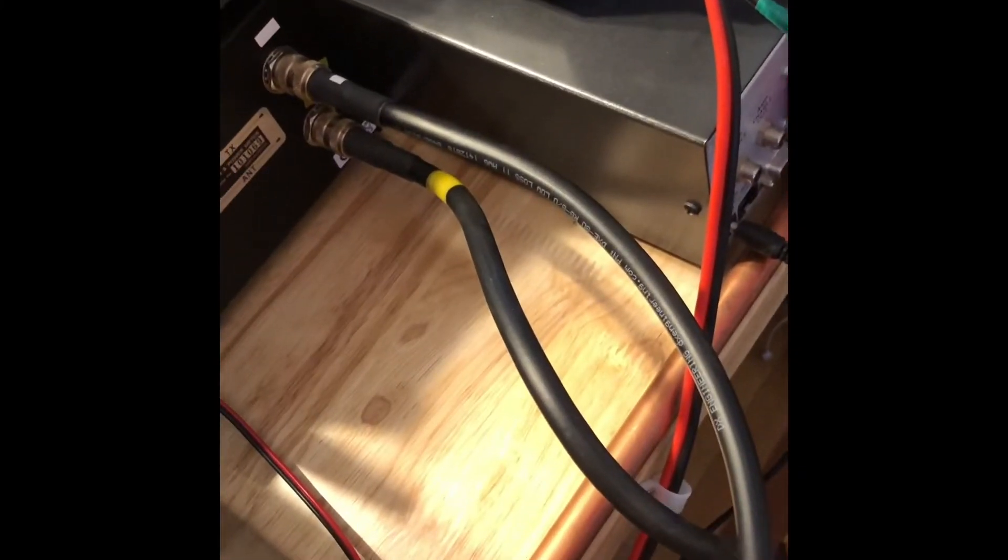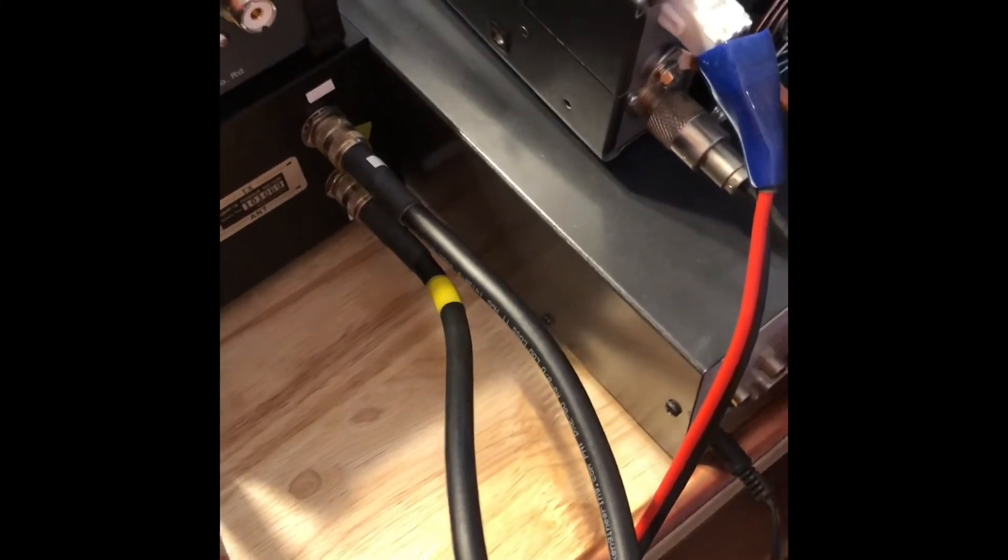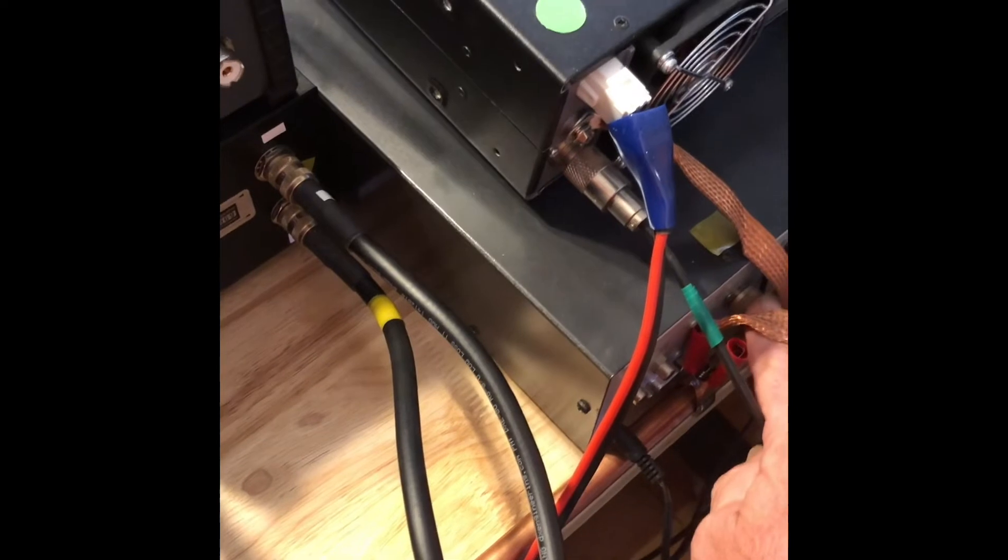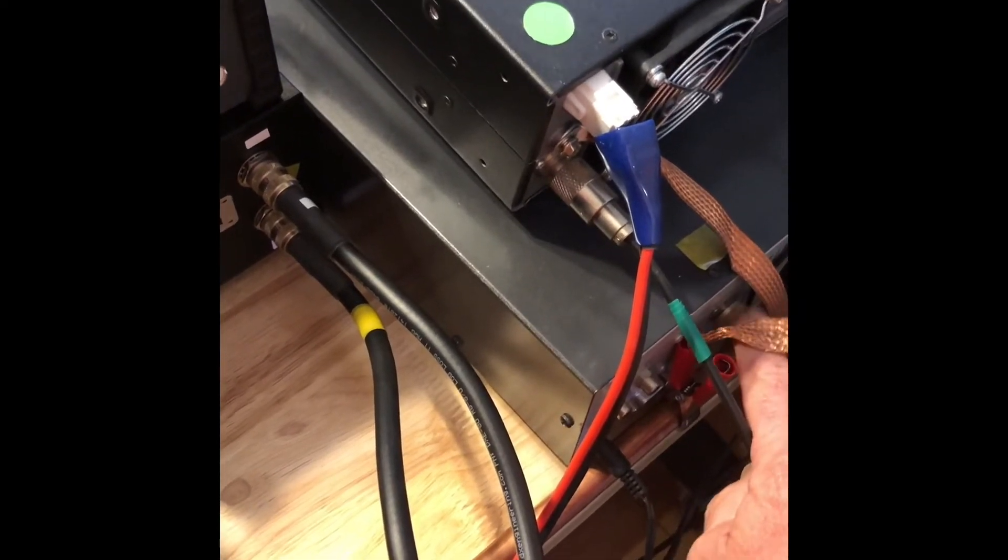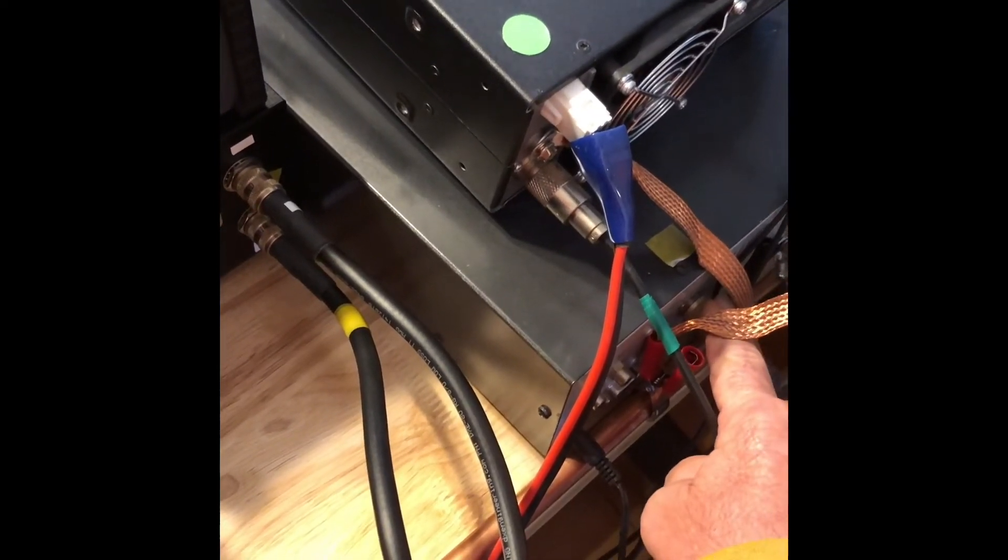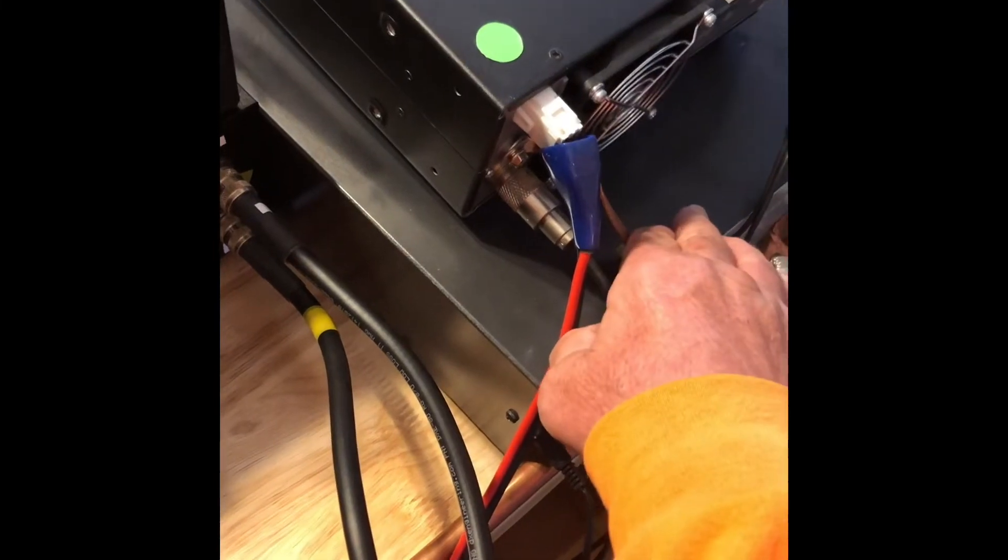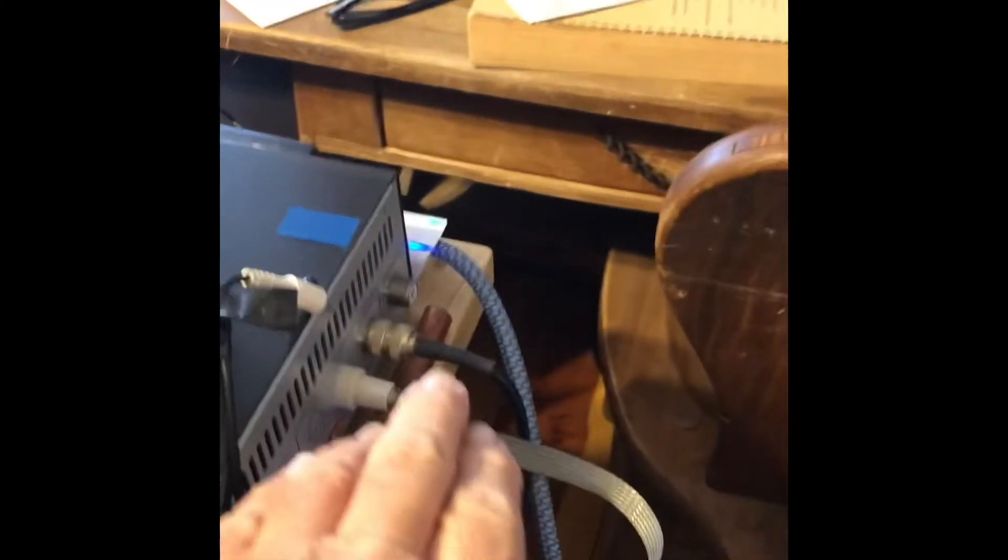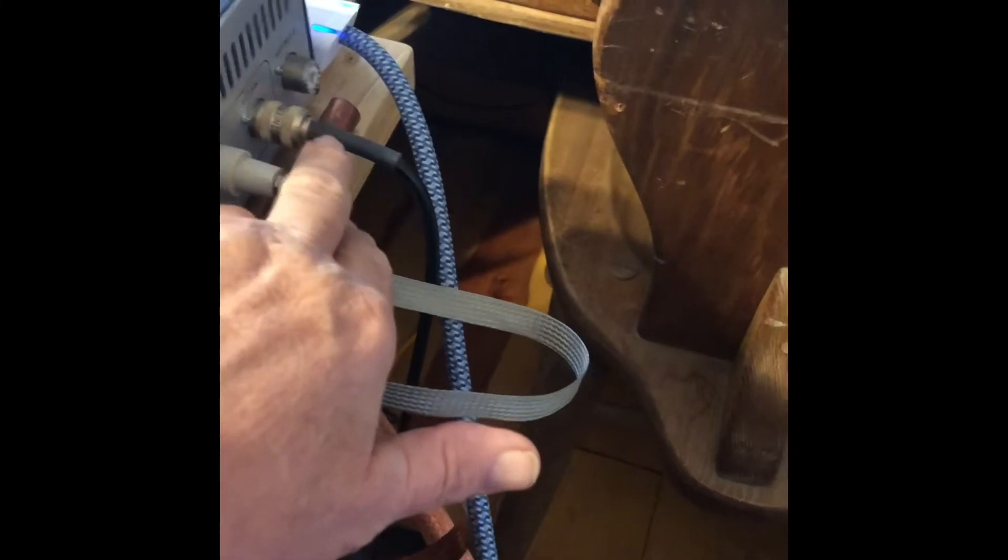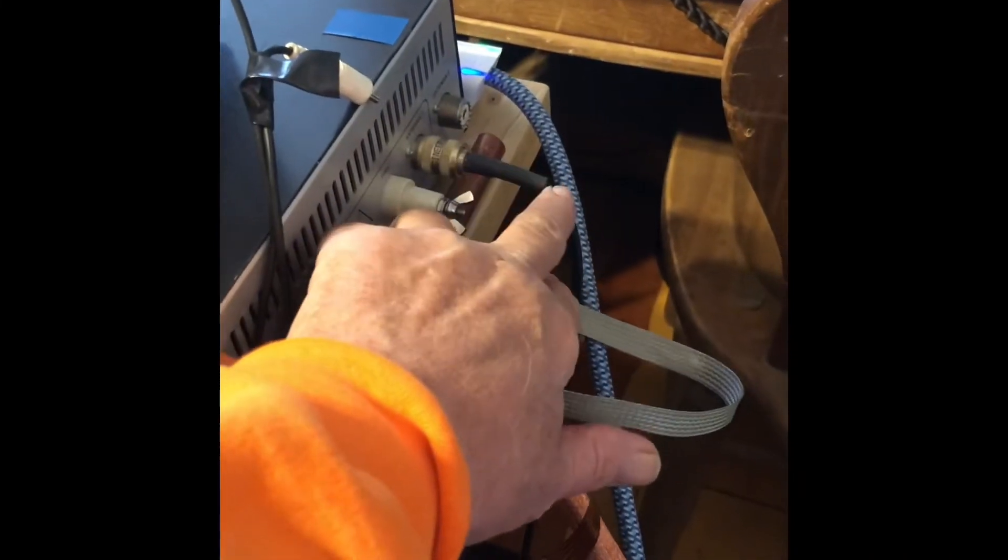...with this piece of coax whereby it goes into the tuner input, where it is tuned. Then it comes out of the tuner with this little small piece of coax and out to the antenna.